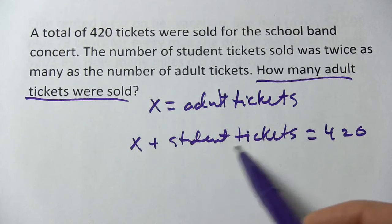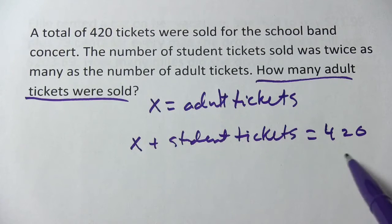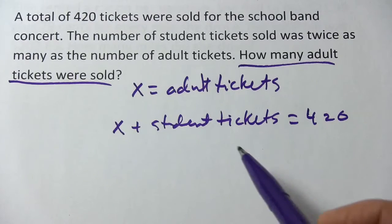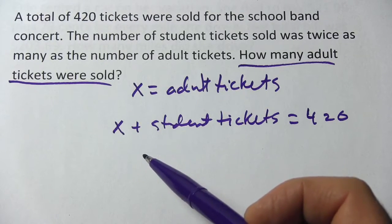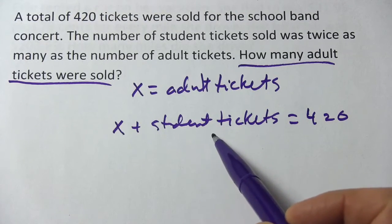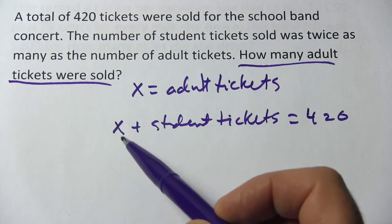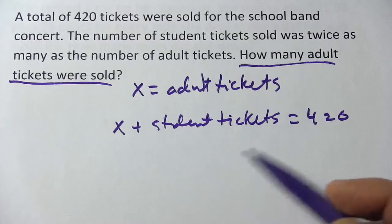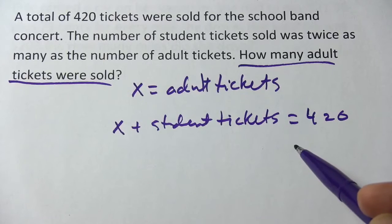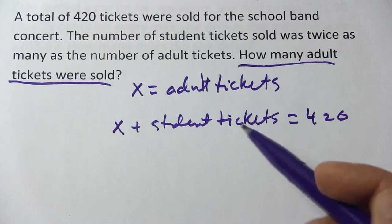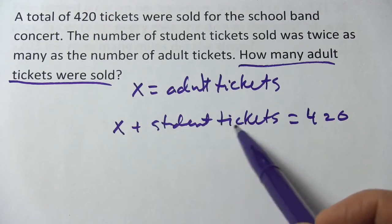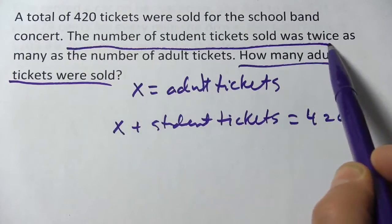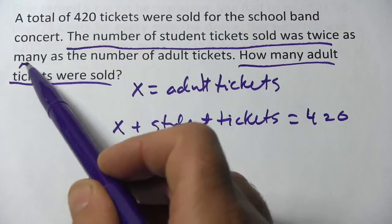But that's not an equation we can solve. x plus student tickets equals 420 doesn't do much for us. What we really need to do is write the number of student tickets in terms of x. If you have one variable in an equation — just an x and some numbers — you can solve things. To do this, we have to look back at our problem, and there's a piece of information there.